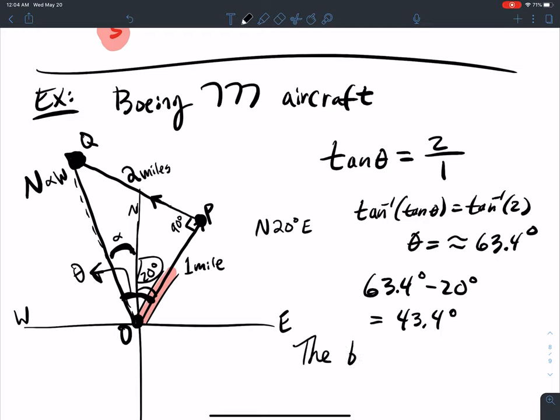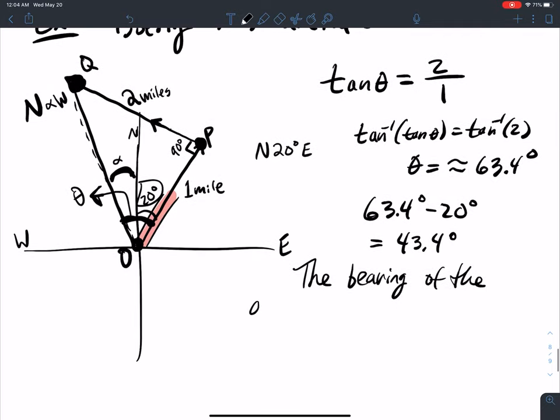So the bearing of the aircraft from the point O, where they took off, to Q where the plane is, is north 43.4 degrees west. And that's it.